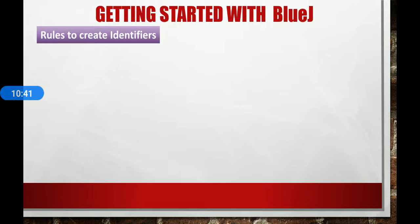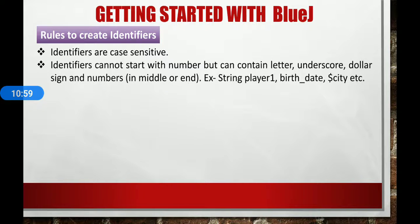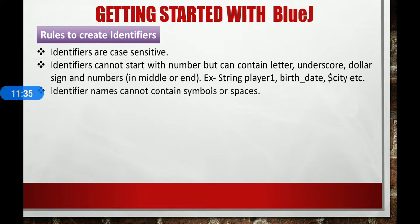Here are some rules to create identifiers — the name of the variable, class, function, or object. First, identifiers are case-sensitive, so uppercase and lowercase letter identifiers are treated as different. Identifiers cannot be any reserved keyword like class, true, integer, string, etc. Identifier names cannot start with a number but can contain letters, underscore, dollar sign, and numbers — for example, player1, birth_date, $city, etc. Identifier names cannot contain symbols or spaces; if you want to give a space, then use underscore, just like birth_date.